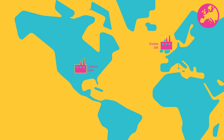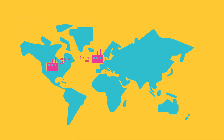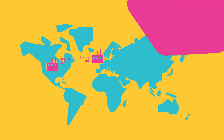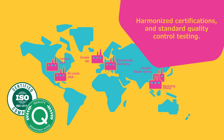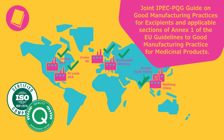To ensure the highest level of quality for our cell culture media, our manufacturing facilities are governed by a comprehensive company-wide global quality management system, including harmonized certifications and standard quality control testing. Additionally, our sites voluntarily comply to the joint IPEC PQG guide on good manufacturing practices for excipients and applicable sections of Annex 1 of the EU guidelines to good manufacturing practice for medicinal products.